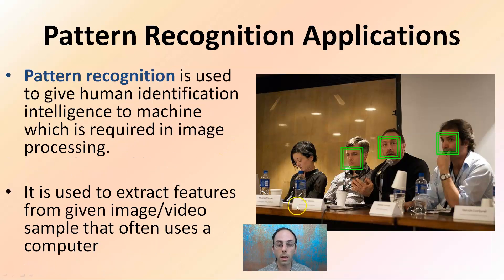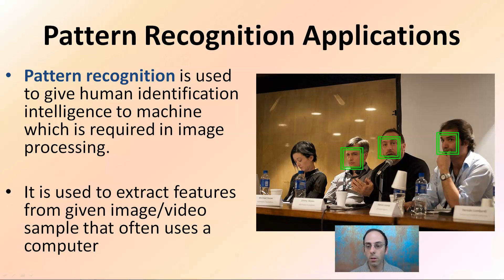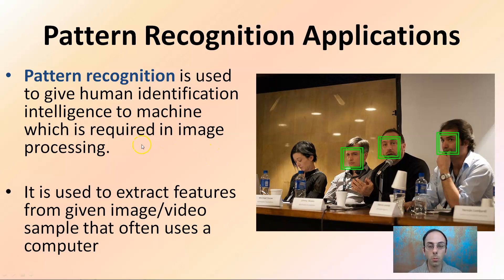Pattern recognition applications — pattern recognition is used to give human identification intelligence to machines, which are required for image processing. It's used to extract features from given video or image samples. This is where artificial intelligence can come in and pick out faces, analyze those faces, and compare them to a databank, for example.